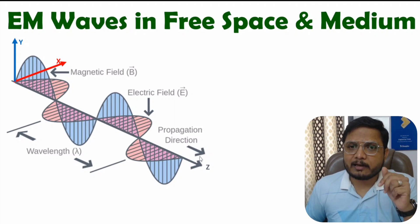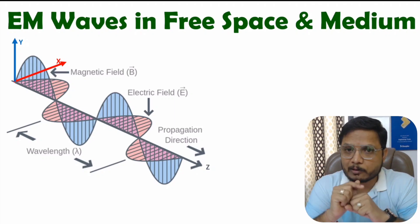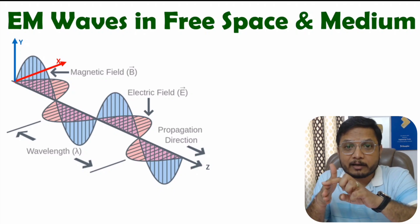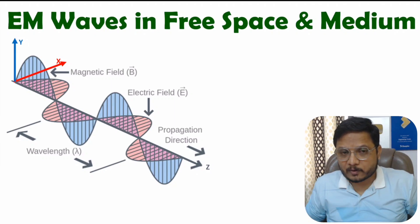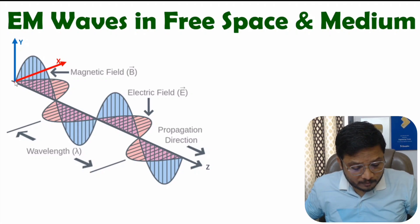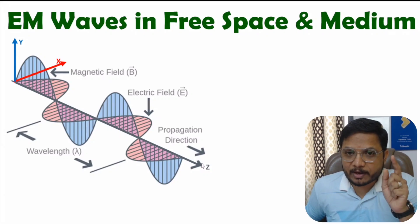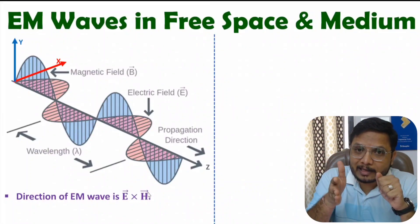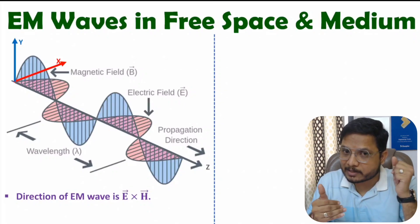First, you need to understand what is the direction of propagation. The direction of propagation can be identified as per the right-hand thumb rule, where you use your right hand and rotate your fingers from the electric field to the magnetic field. Then the direction of propagation will be in the thumb's direction. So, direction of propagation of an EM wave is in the direction of E cross H — rotating fingers from electric field to magnetic field, the thumb points in the direction of propagation.